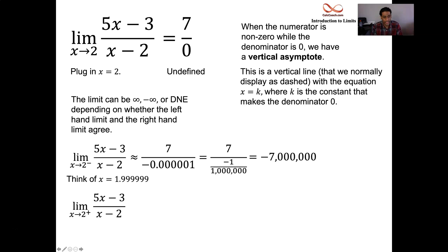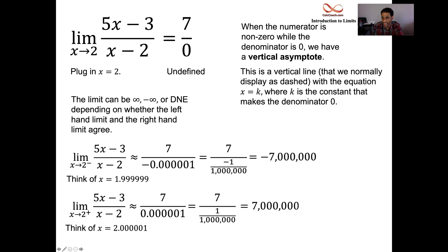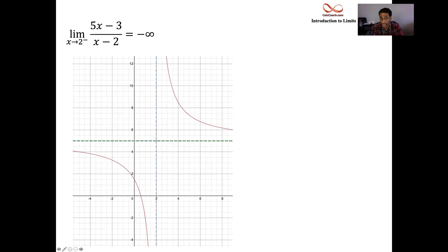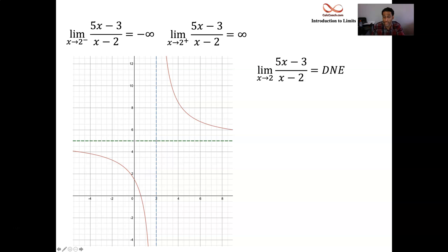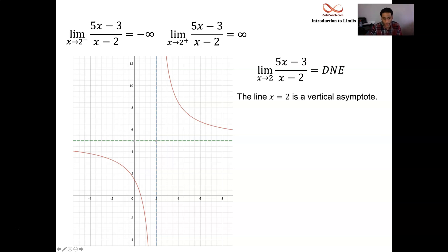From the right-hand side, consider a number close to 2 but bigger, like 2.00001. Subtracting the 2 now gives a positive value. So from the right-hand side, you're headed towards positive 7 million — positive infinity. From the left it's negative infinity, from the right it's positive infinity: they disagree. If both were going to infinity we could report infinity; if both were going to negative infinity we could report negative infinity. But when they disagree, we report the answer as does not exist.